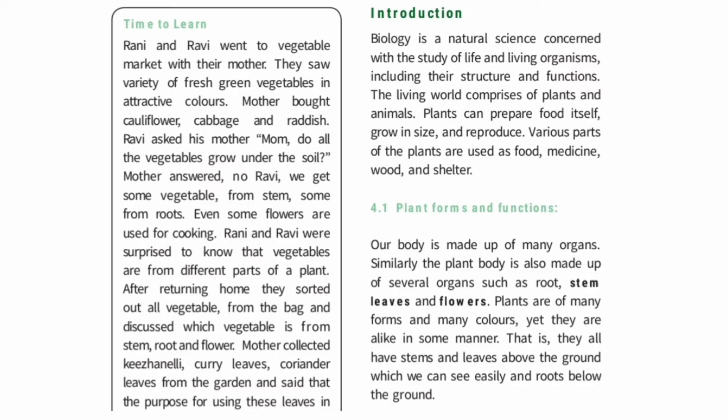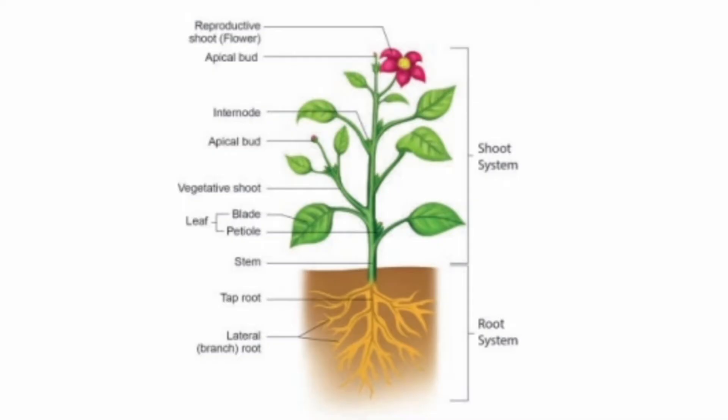The roots are found below the ground, and the stems and leaves are above. Look at the diagram. The green-coloured portion seen above the soil is the shoot system — you can see leaves, buds, and flowers. In the future, fruits are formed. The yellow-coloured portion below the soil is the root system.